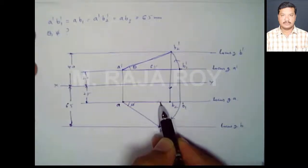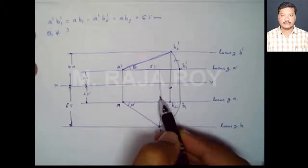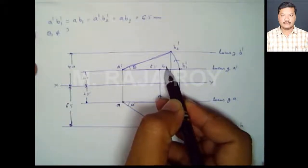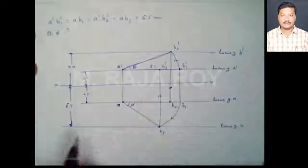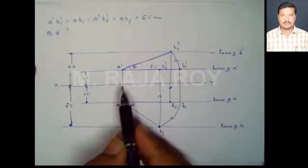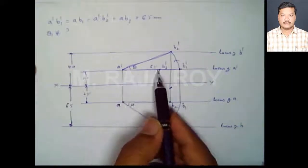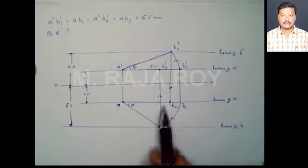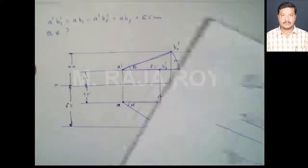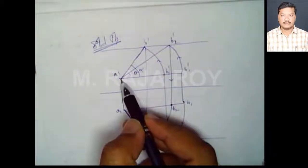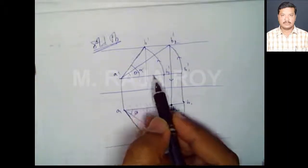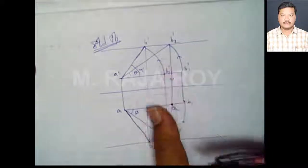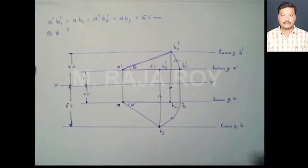From B3' you draw a projector to the initial front view A'B1', and automatically you will get the reduced front view A'B3'. After obtaining the reduced front view A'B3' and the reduced top view AB2', you are ready to get the final projections.